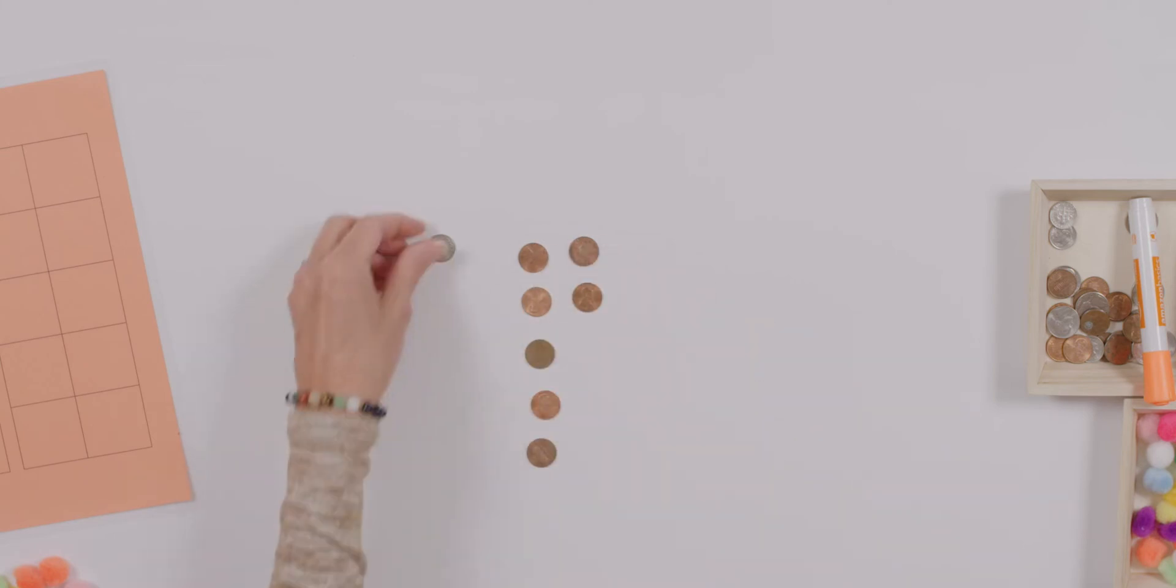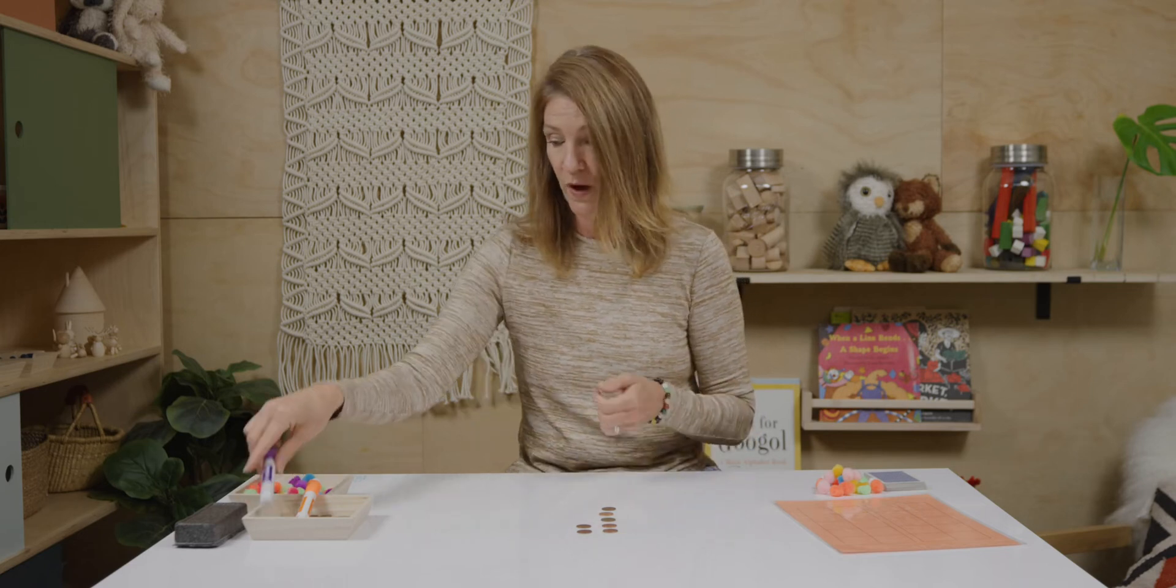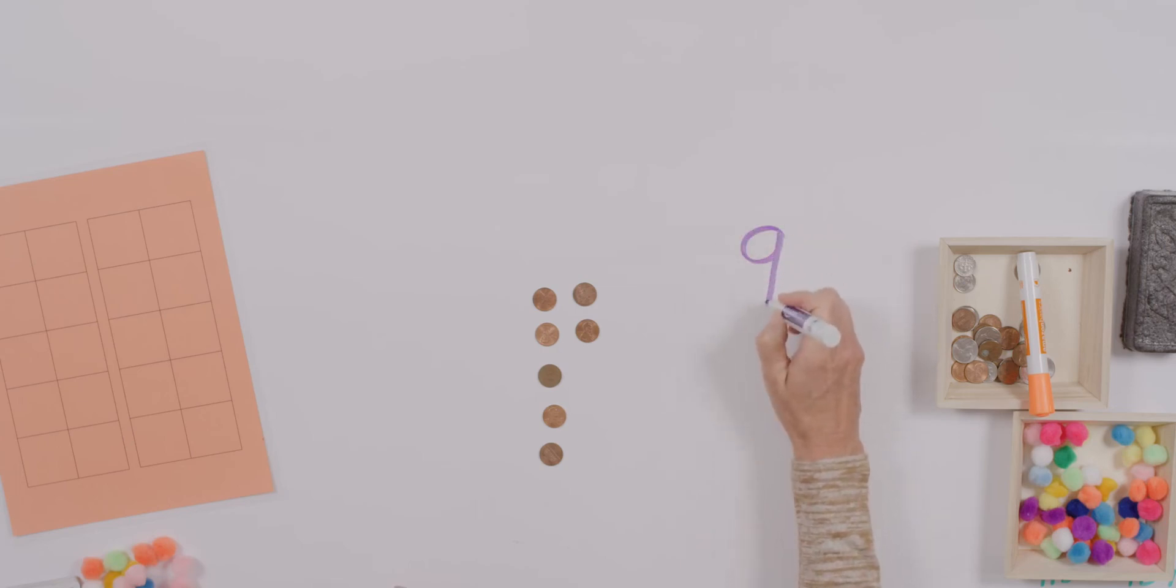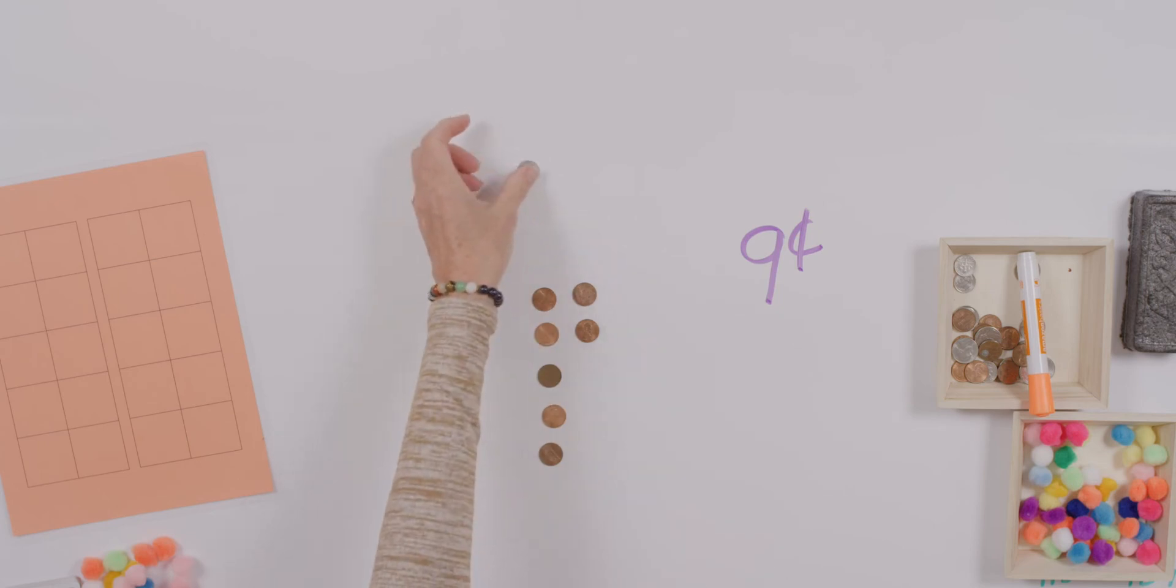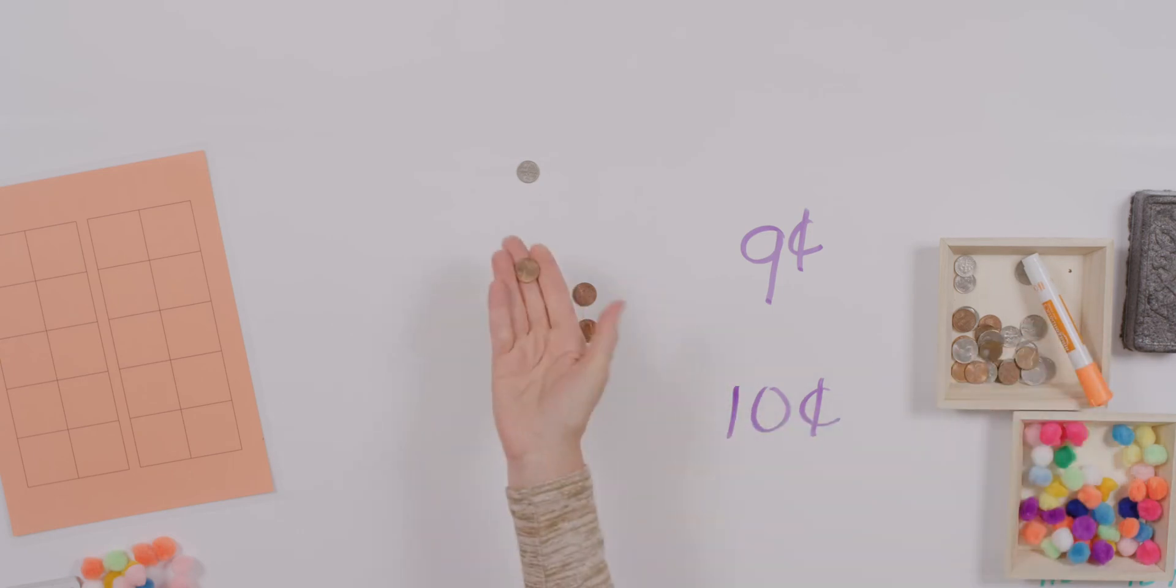When you go to the market, if you have to purchase something for nine cents, which combination of these coins will you use? We don't have quite enough here, do we? So, we'll have to use our dime, won't we? If I give my dime over to the person who is selling things, the clerk, will they give me anything back? What I'm trying to purchase costs nine cents. And I'm paying with ten cents. What will they give me back? That's right. All right. The clerk owes me. And what they owe me is a penny.